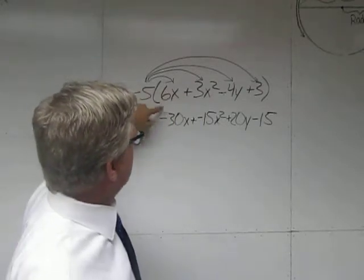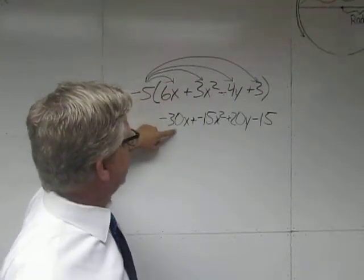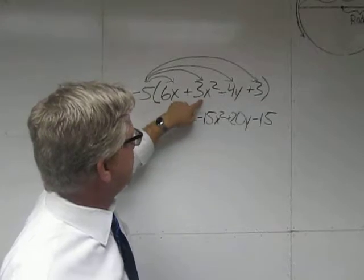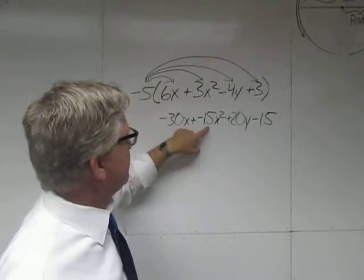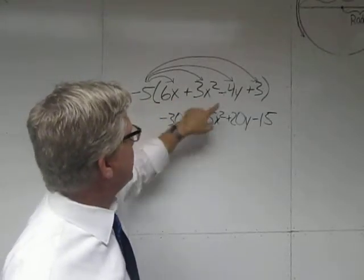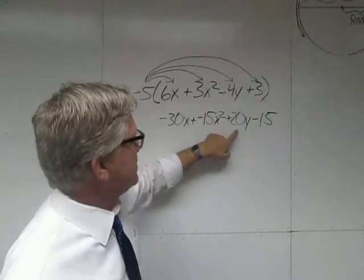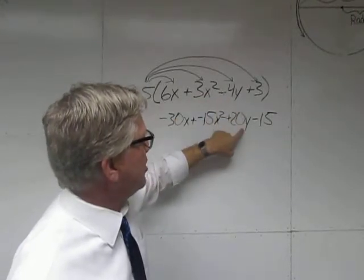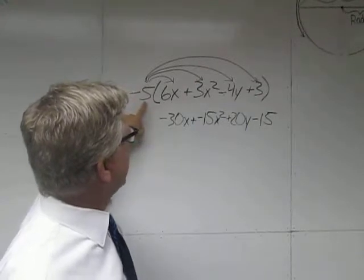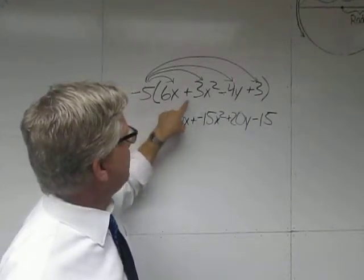So everyone follow me. Negative 5 times 6, negative 30x. Negative 5 times 3x squared is negative 15x squared. Negative 5 times negative 4 is positive 20y. Keep the variables. All you're doing is multiplying negative 5 times each coefficient.